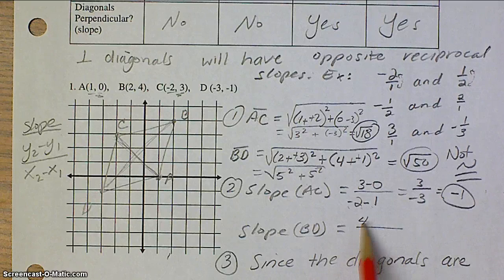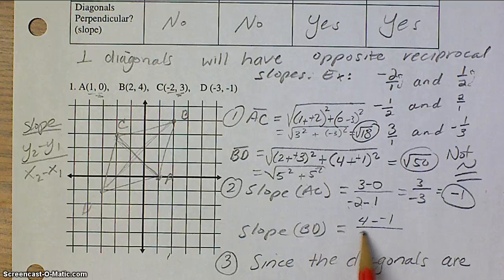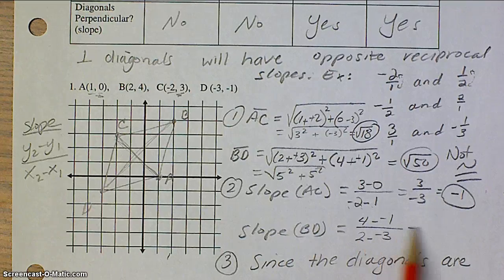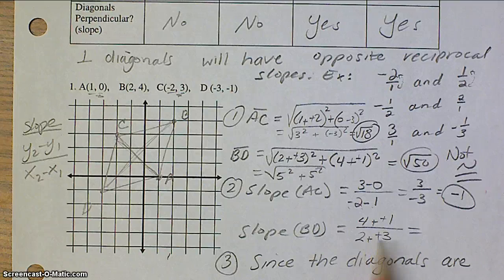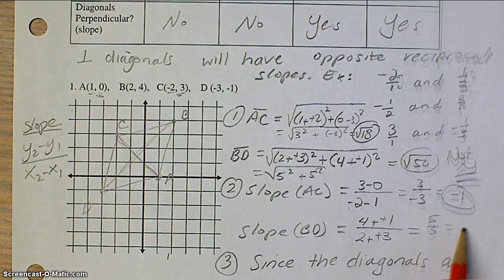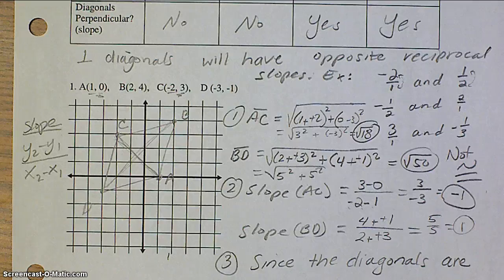4 minus negative 1, 2 minus negative 3. Well, minus negative becomes a plus. So, we have 5 over 5, which is just 1. Now, let's look at our slopes.